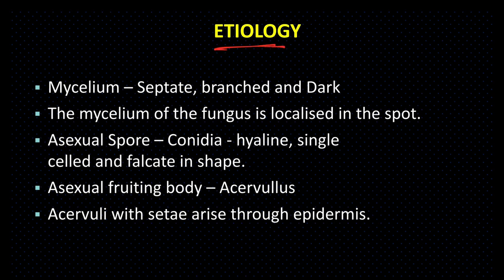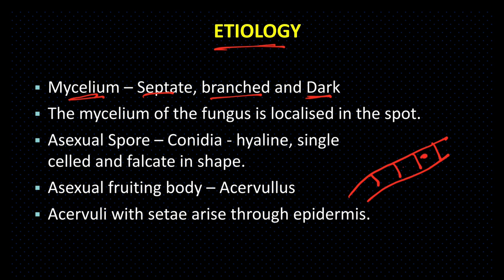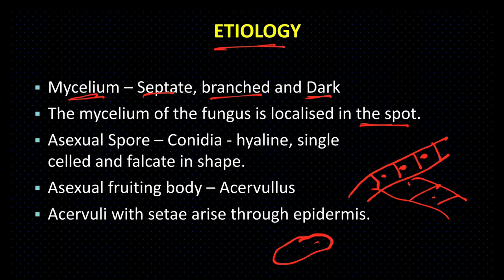Etiology of the pathogen — Mycelium: इसका mycelium septate, branched और dark color का होता है। Septate means इसमें cross walls present होते हैं और एक-एक nucleus present होते हैं। इसमें branching होती है और यह dark color का होता है। The mycelium of the fungus is localized in the spots — plant में जहाँ पर spots आते हैं, वहीं पर mycelium present होते हैं।